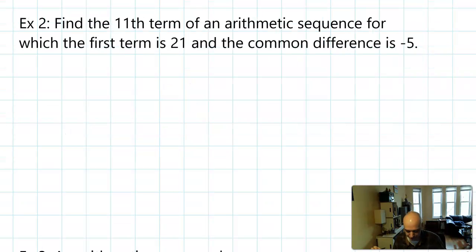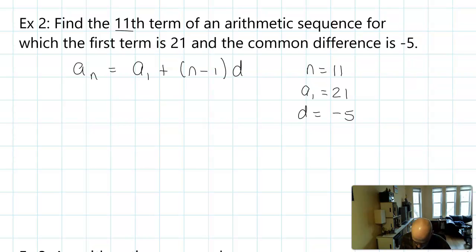Let's look at some problems you can do with our definition of arithmetic sequence. Find the 11th term of an arithmetic sequence for which the first term is 21 and the common difference is -5. We can write out the definition first. I always like to do that. So a_n = a_1 + (n - 1)d. All right. We're looking for the 11th term, so n is 11. The first term is 21, so a_1 = 21. The common difference is -5, so d = -5. Let's plug all of those into the formula.